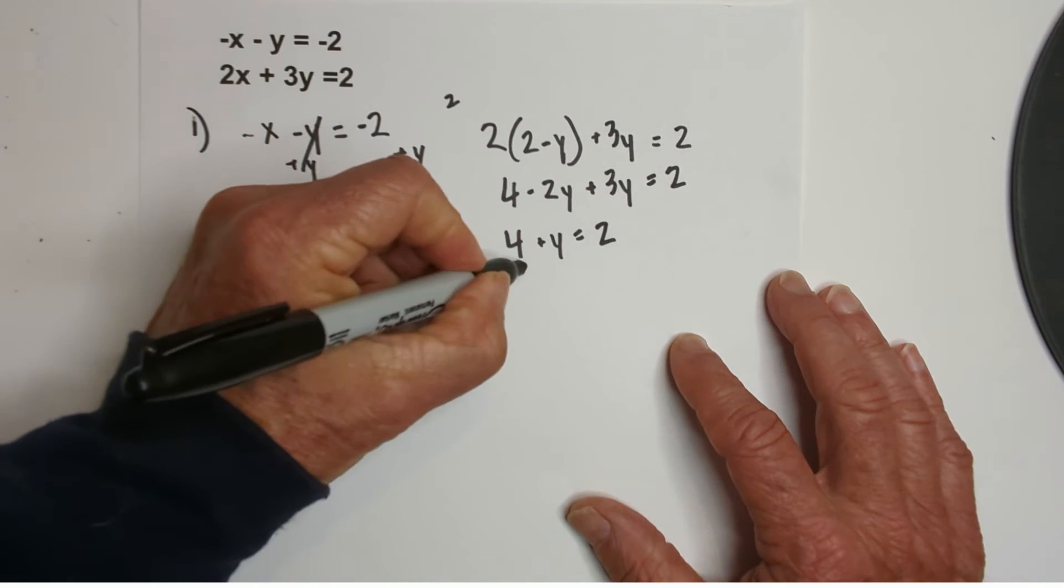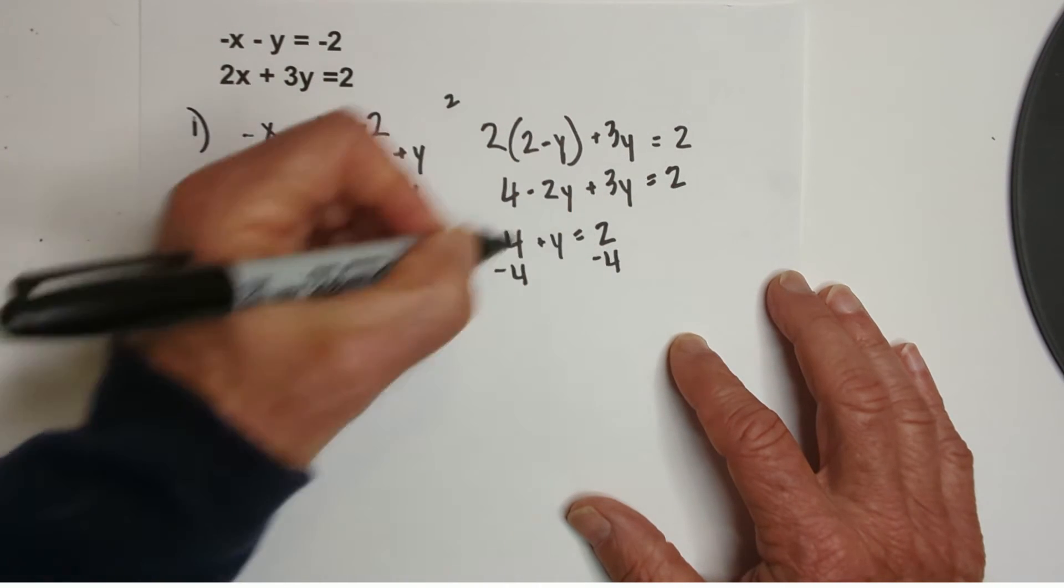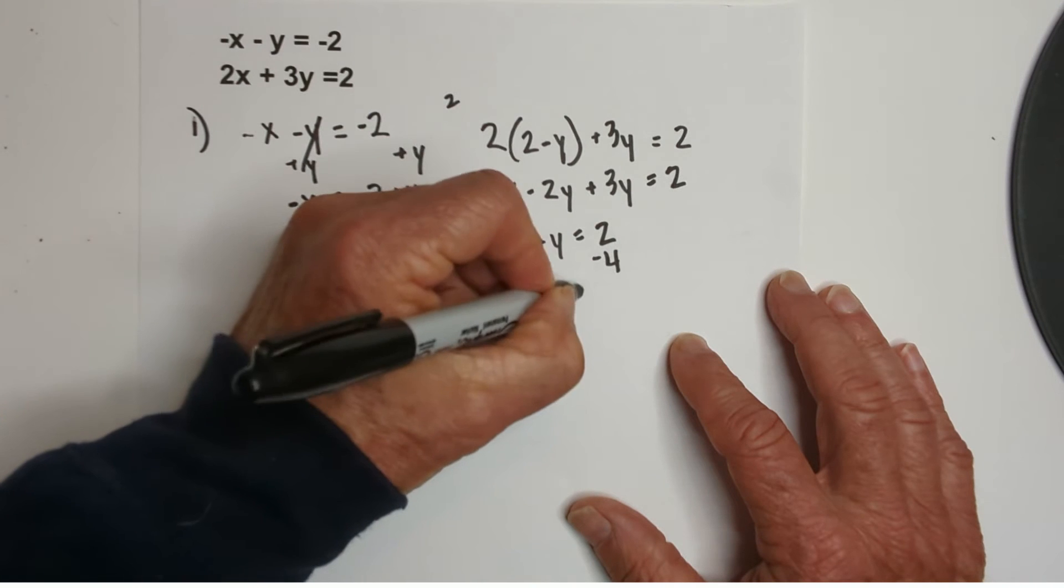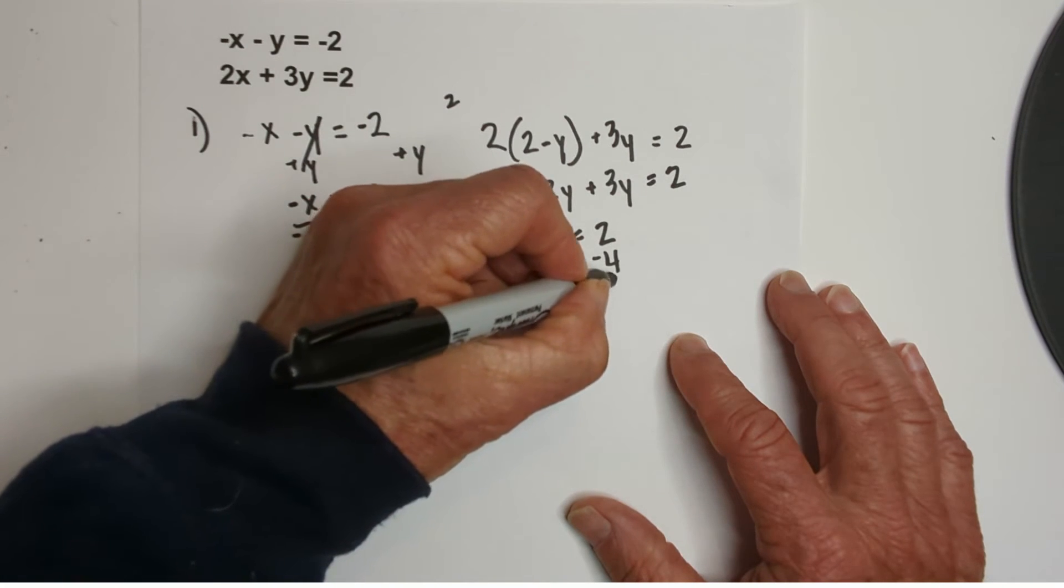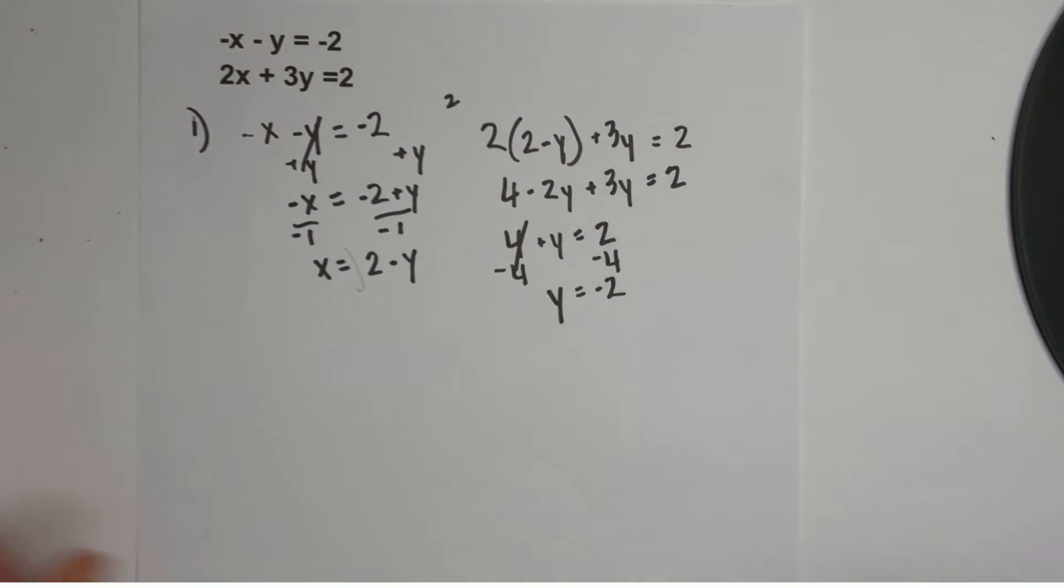I'll subtract 4 from both sides. Okay. These cancel. y = -2. So, now I have an answer for y.